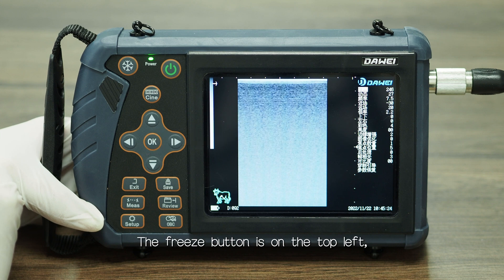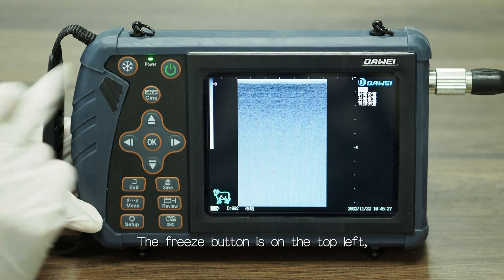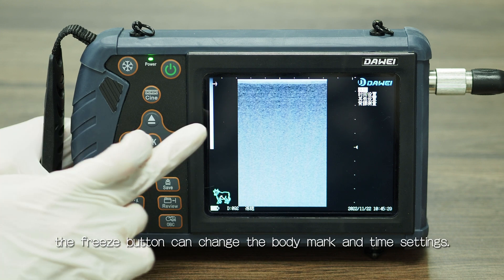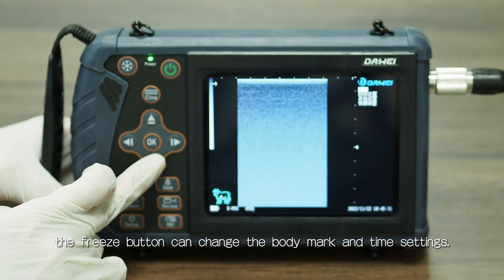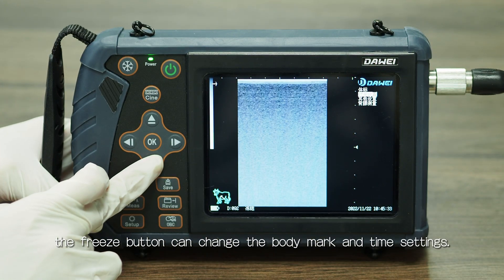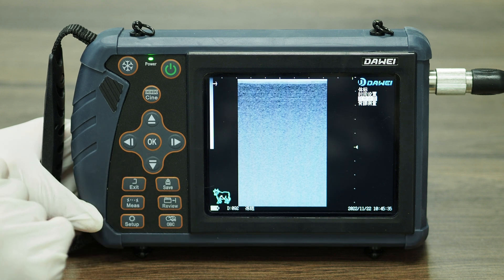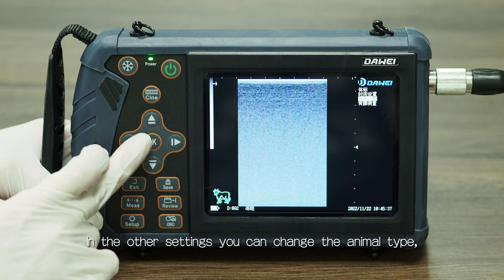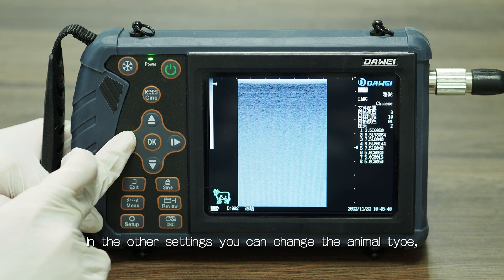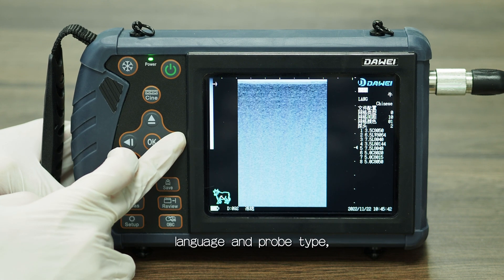Button operation: The freeze button is on the top left. The freeze button can change the body mark and time settings. In the other settings, you can change the animal type, language, and probe type.